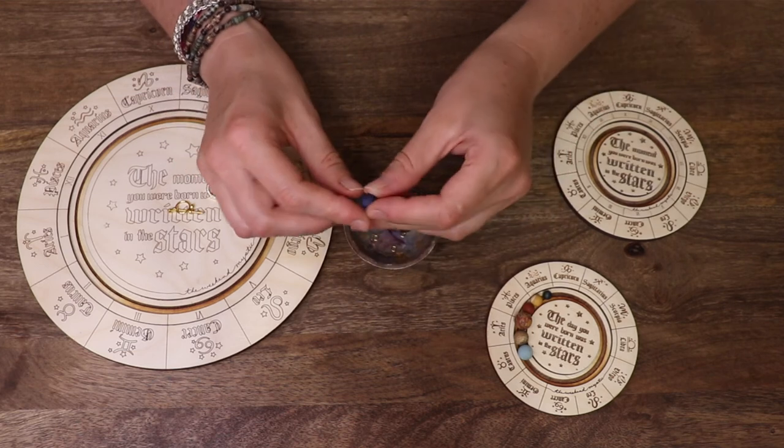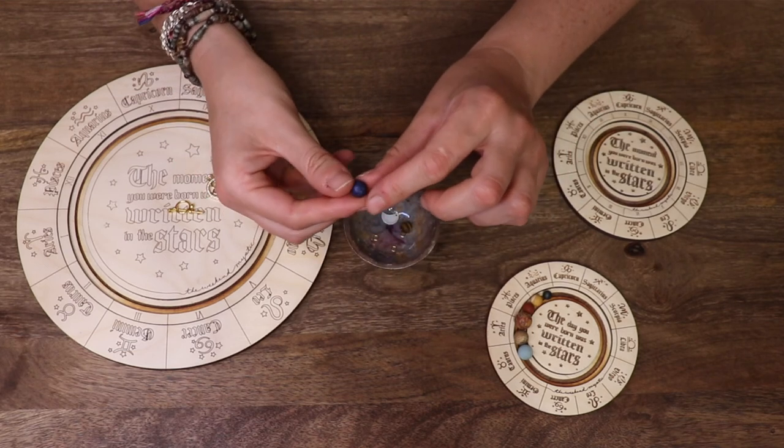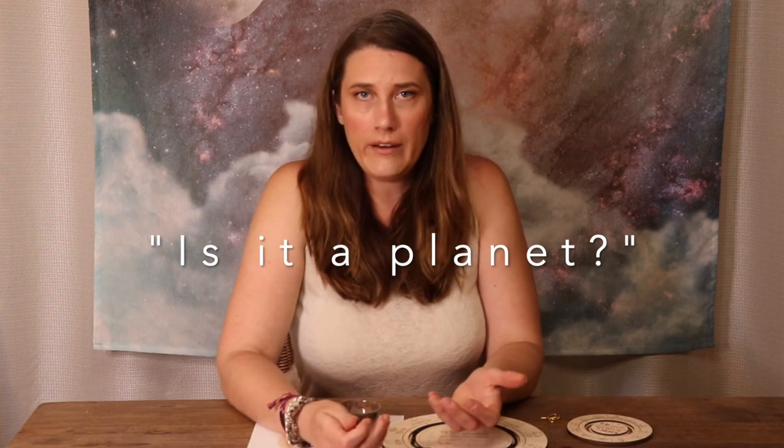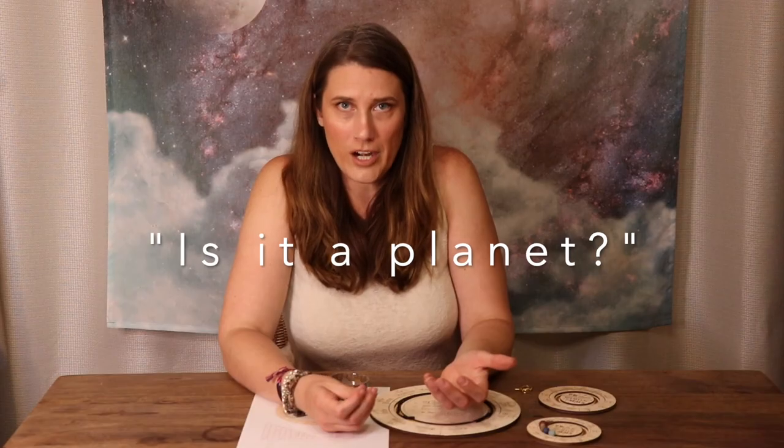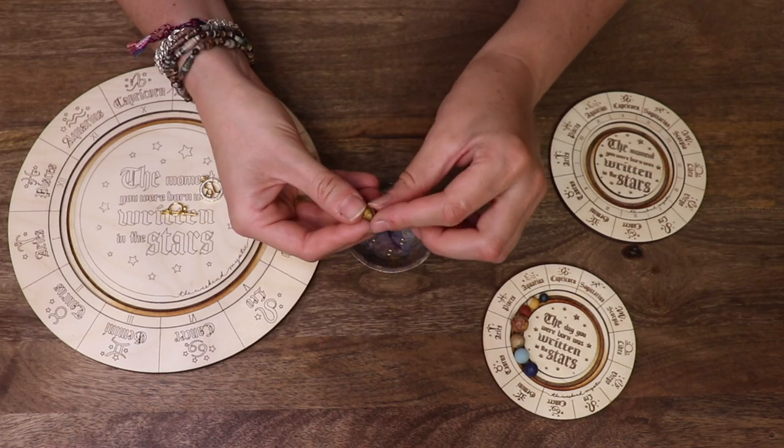And then I have Neptune. Neptune is a 10 millimeter lapis lazuli. And then finally, Pluto, a little planet. I don't care. It's in our chart. Might not be a real planet, but in this case, it's real tiger eye. So we have an eight millimeter tiger eye.